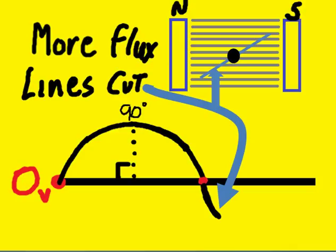More flux lines are cut now, as it's moving counterclockwise. Another 45, and voltage increases, but in the opposite direction now.